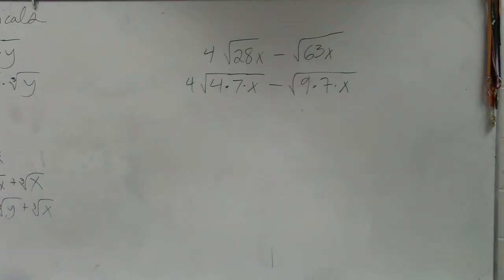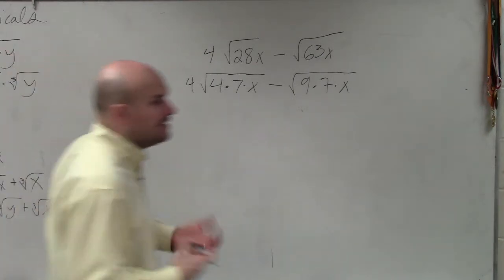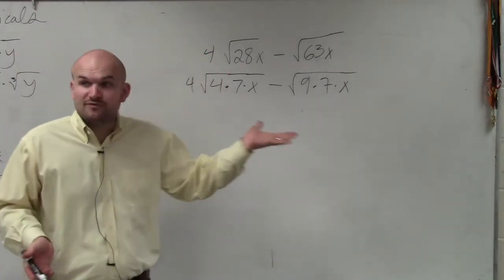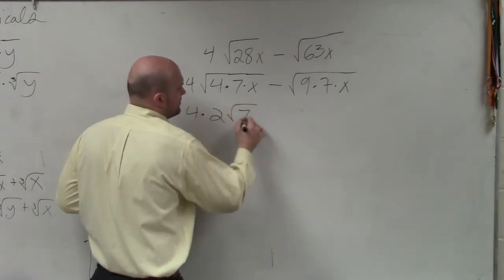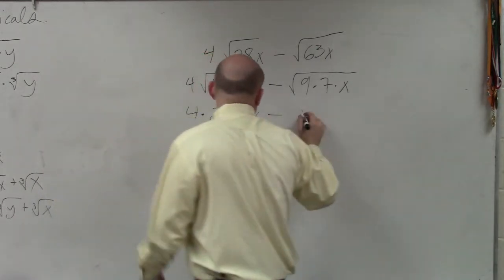Now, what I did is I rewrote them as square numbers. The square numbers I used were 4 and 9. The reason why I like using 4 and 9 is because I can take the square root of 4, which is 2, and the square root of 9 is 3.